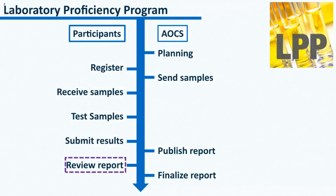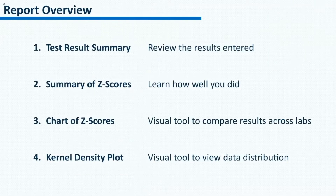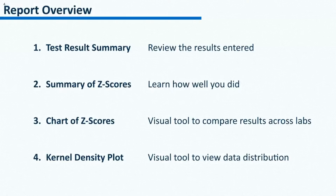This report is published every quarter. The report has four parts: test results summary, summary of z-scores, chart of z-scores, and the kernel density plot. You could review your results submitted in the test results summary. You could find out how well you did in the summary of z-scores. The chart of z-scores and the kernel density plot are provided for better visual comparison of the results across labs.